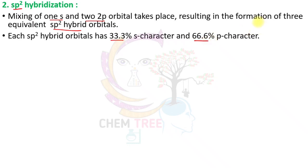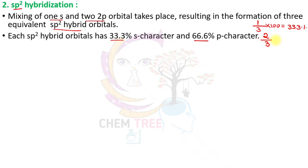We can calculate like this: for s character, 1 orbital is present — 1 divided by total orbitals (3) multiplied by 100 gives 33.33%. For p character, 2 p orbitals are present — 2 divided by 3 multiplied by 100 gives 66.66%.